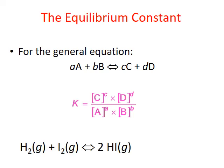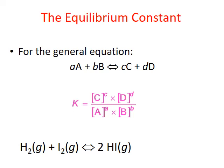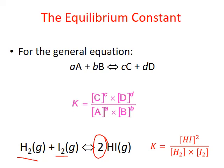Let's look at an example. In this balanced chemical equation, one molecule of hydrogen reacts with one molecule of iodine to produce two molecules of hydrogen iodide. The equilibrium expression used to calculate K would be the equilibrium concentration of hydrogen iodide, our product, raised to the second power — which is its coefficient in the balanced equation — divided by the concentrations of our reactants, hydrogen and iodine, each raised to their coefficient of one.